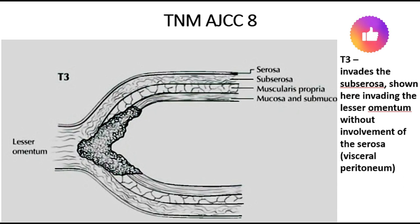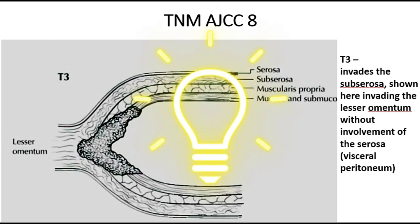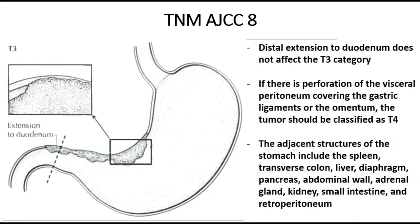The serosa layer is reflected on the leaf of the omentum. If the tumor is invading the lesser curvature and lesser omentum but there is no actual perforation, it is still a T3 tumor. Distal extension into the duodenum does not affect the T stage — if the tumor epicenter is in the stomach and involves the first part of duodenum, it will still be labelled as T3. If there is a perforation of the visceral peritoneum covering the gastric ligaments or omentum, it will be classified as T4.